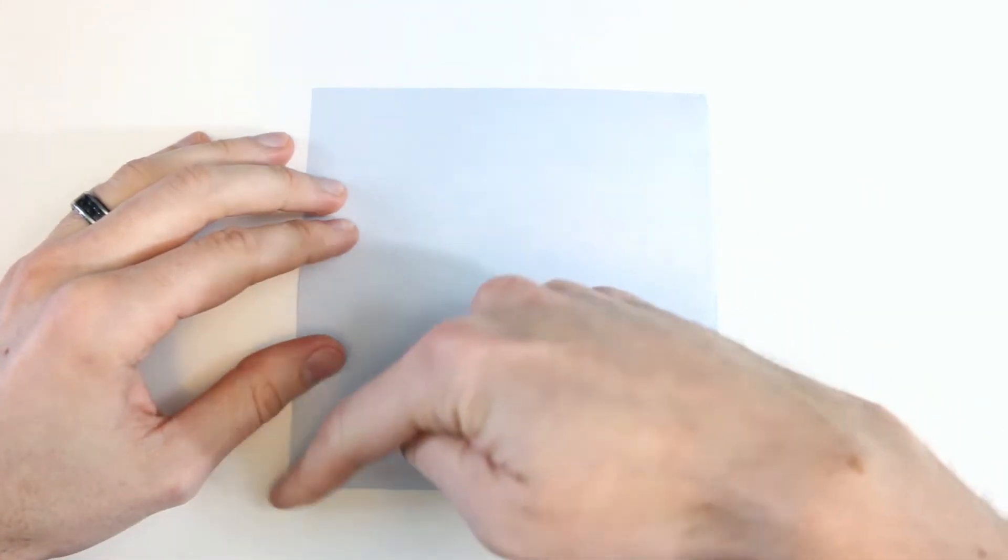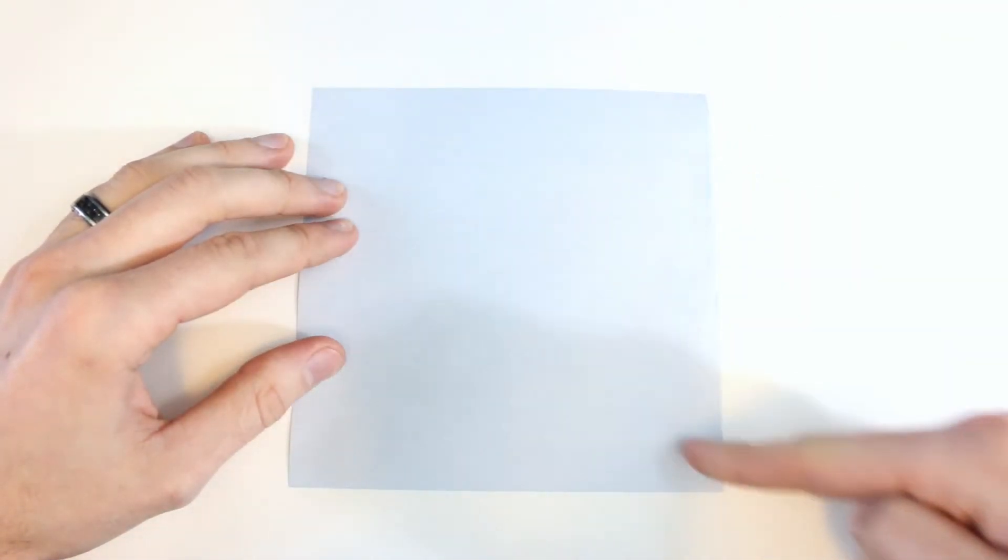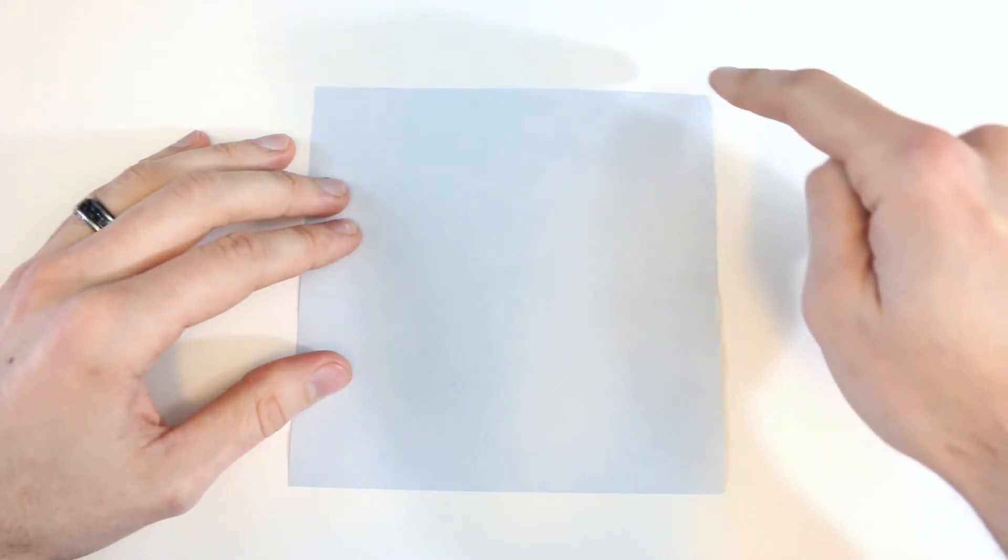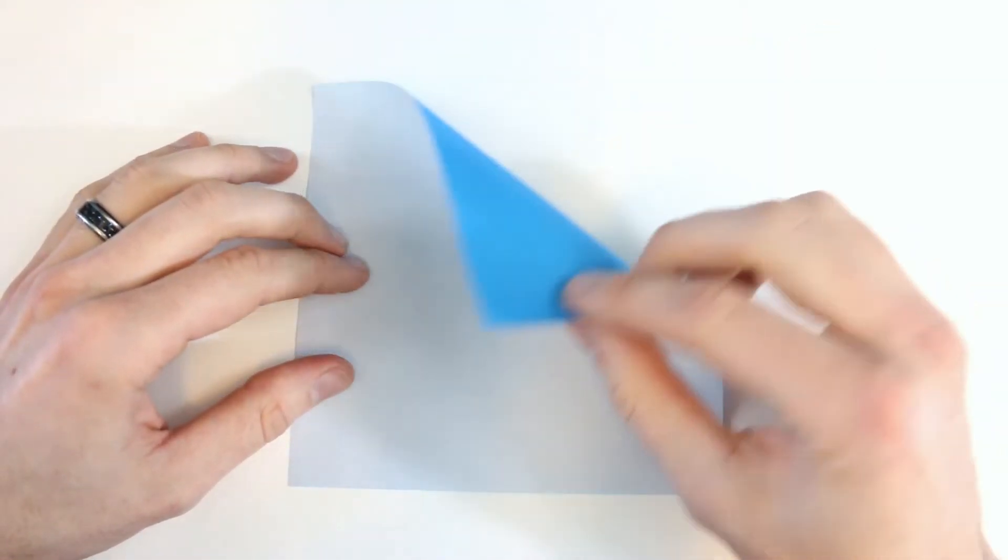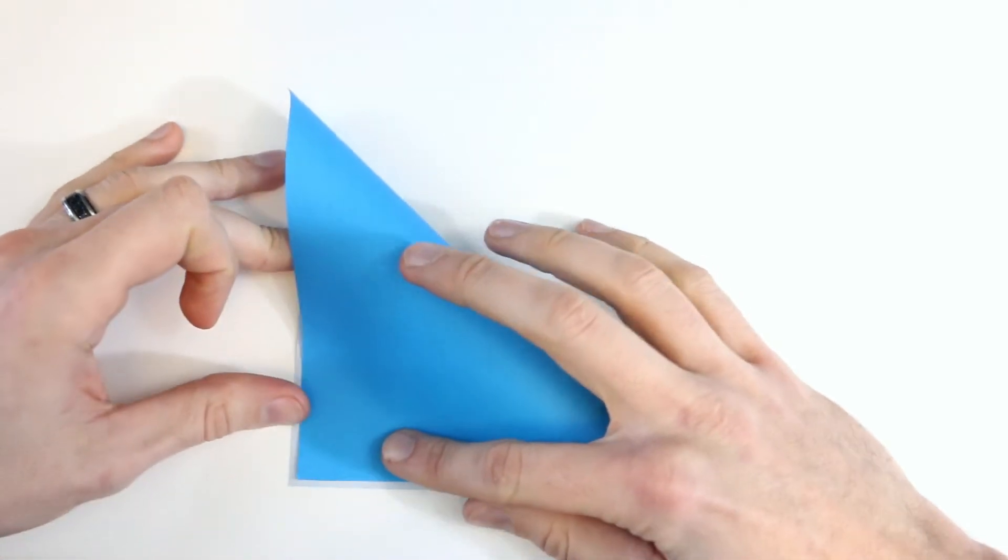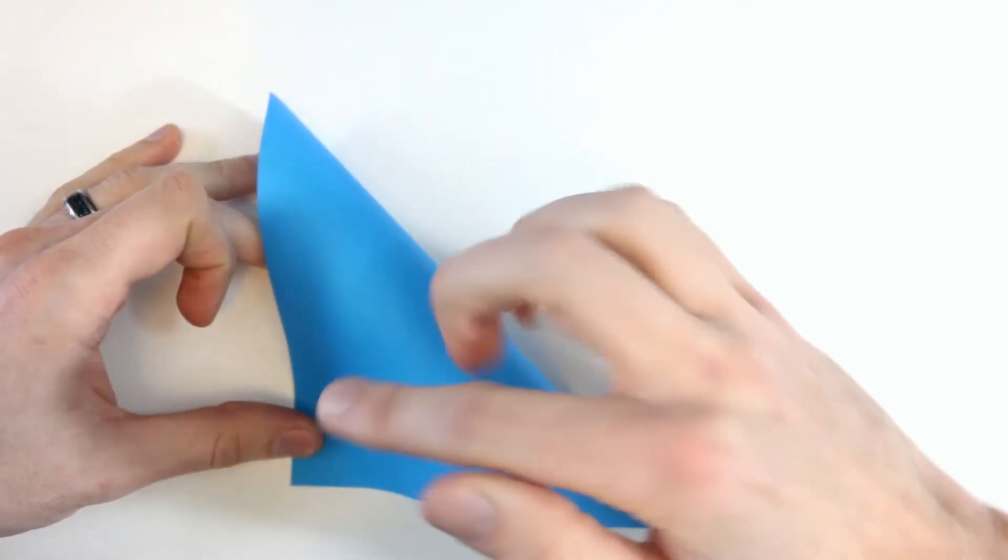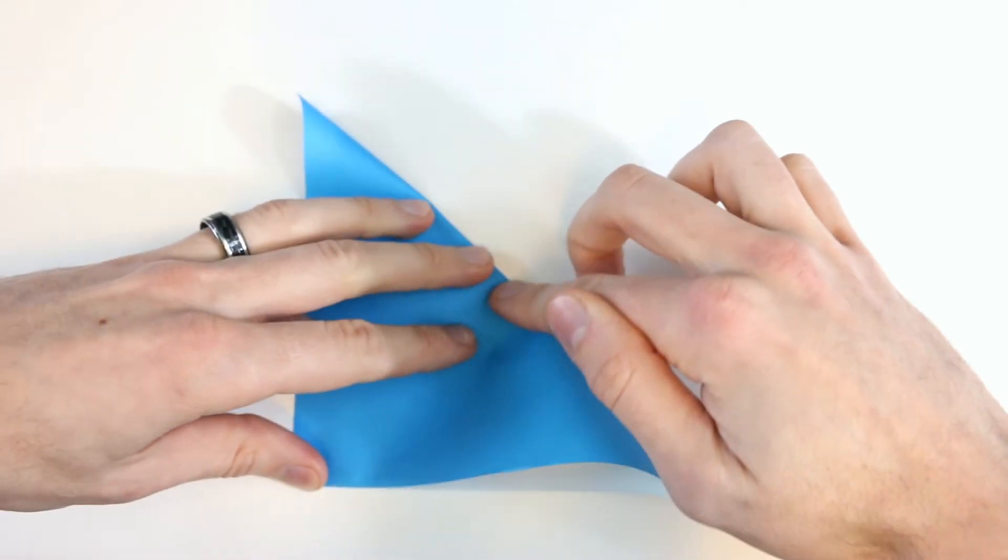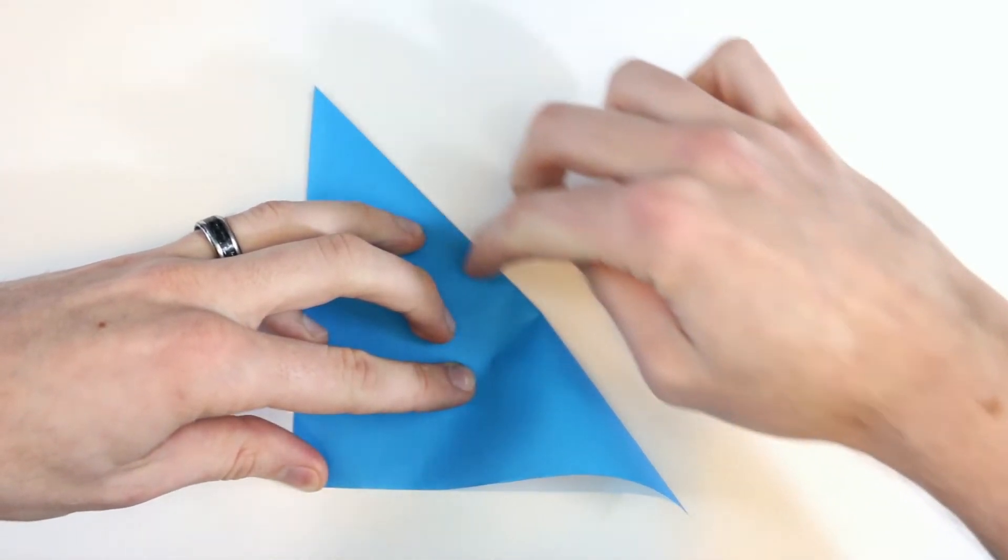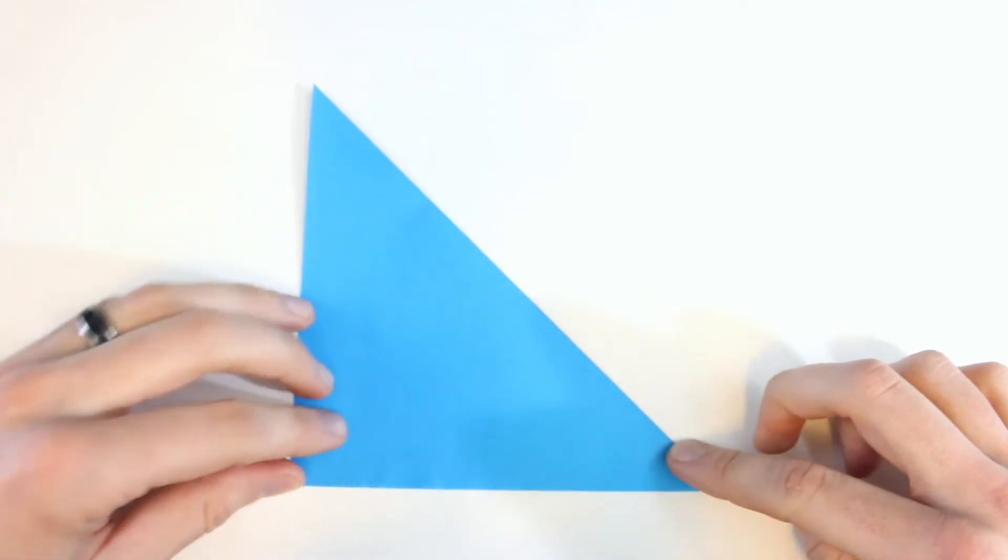Next we'll valley fold in half along both of the diagonals. So we'll bring this top right corner down to the bottom left corner. Make sure those corners line up and then hold them in place and crease all the way across. And then unfold.